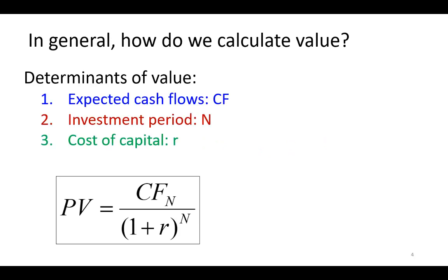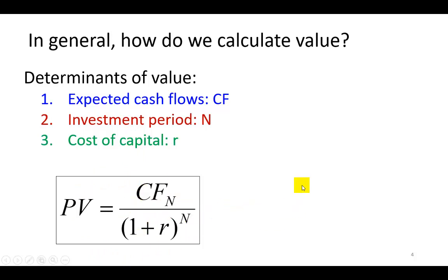We've already learned that to determine the value of any investment, we need three input variables, color-coded here to reinforce concepts. They include the expected cash flows from the investment, the investment period or maturity of the investment, and importantly, the required rate of return on that investment, also known as the cost of capital. Here are the notations we're going to be using for these calculations. Armed with these three variables, we can calculate, for example, the present value of that investment.